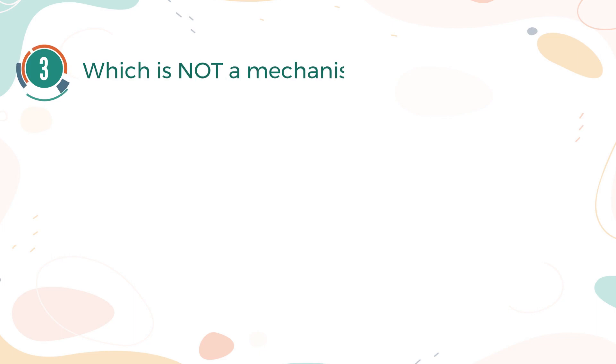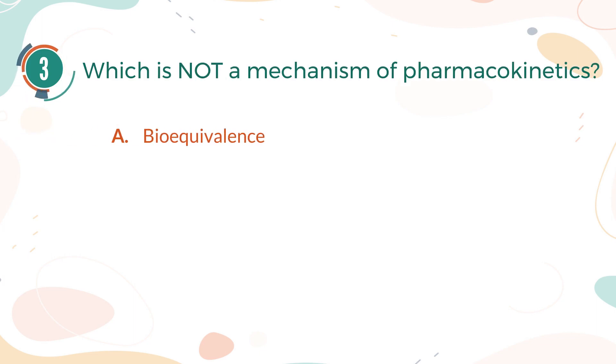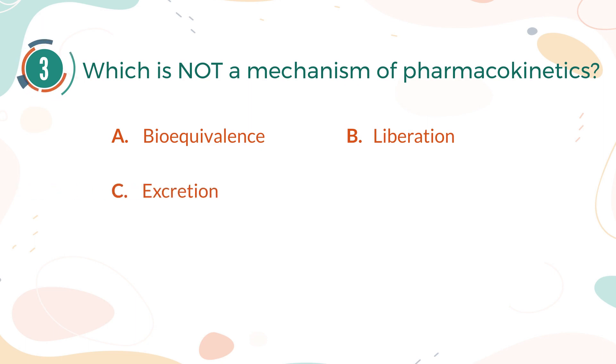Number 3. Which is not a mechanism of pharmacokinetics? A. Bioequivalence. B. Liberation. C. Excretion. D. Absorption.